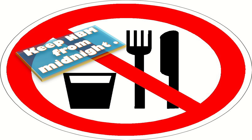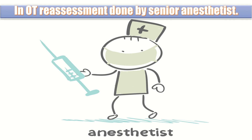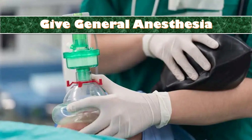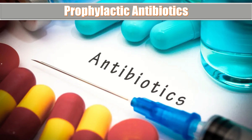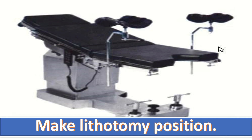Keep the patient nil by mouth from midnight. Shift the patient to the operating theatre early morning after changing into OT dress. In OT, reassessment is done by a senior anaesthetist. Ask the patient to empty her bladder before the procedure. Give general anaesthesia administered by a senior anaesthetist. Give a prophylactic first dose of antibiotic, as this is the critical time for contamination of blood with ascending organisms.